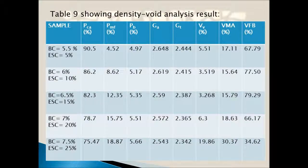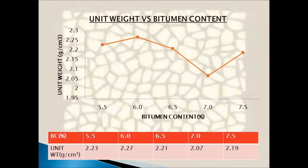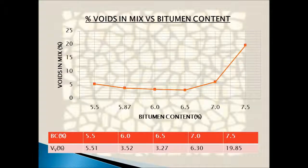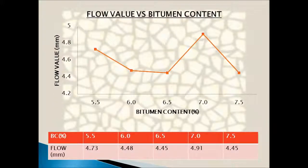The Optimum Bitumen Content (OBC) is found out by taking the average of maximum stability, maximum unit weight, and the median of limits of percentage air voids in the total mix. From these graphs, we take the corresponding bitumen content values and take their average, which is 6.12%. Corresponding to this optimum bitumen content, the flow value and voids filled with bitumen are noted down and compared with standard values from IS 2386, confirming that they satisfy the requirements.